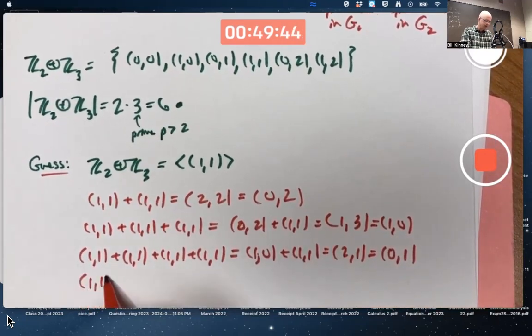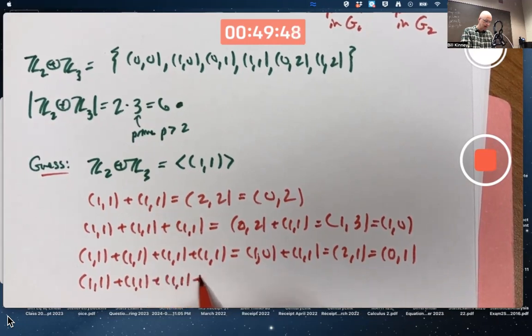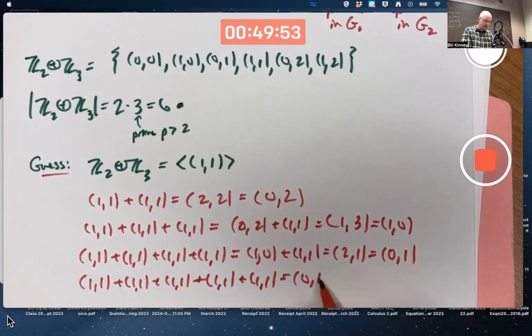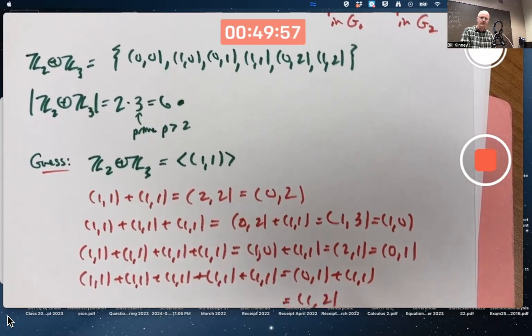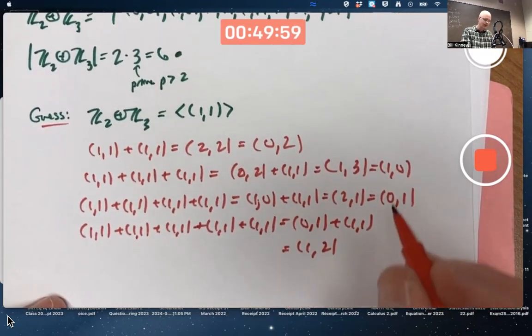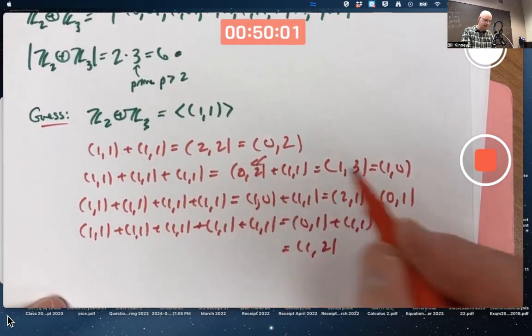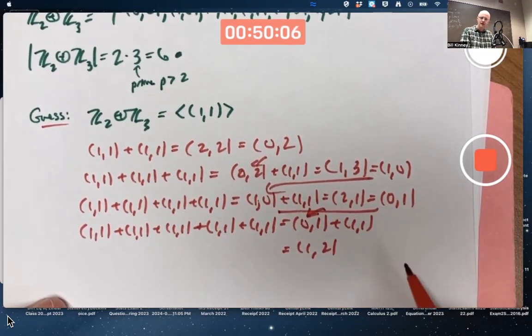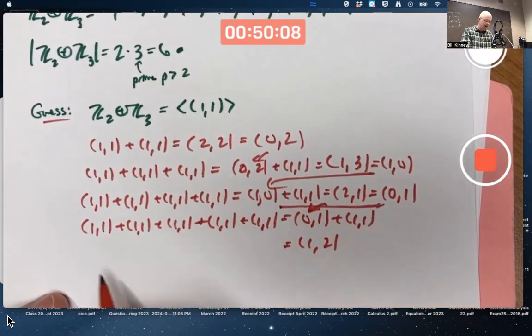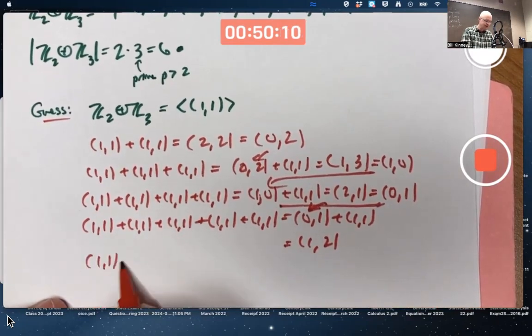With 5 terms, that's going to be (0,1) plus (1,1), which will be (1,2). It wasn't clear. I just keep bringing these things over here. And finally, okay, write all 6.